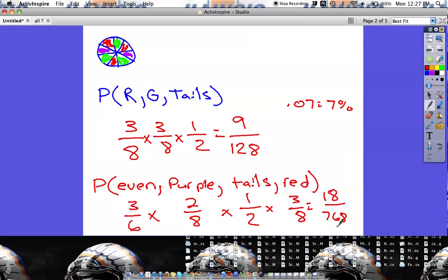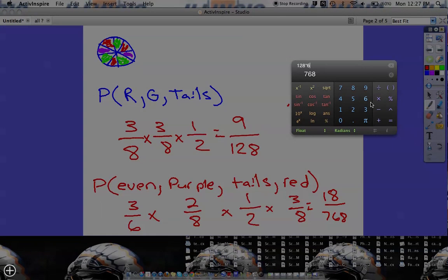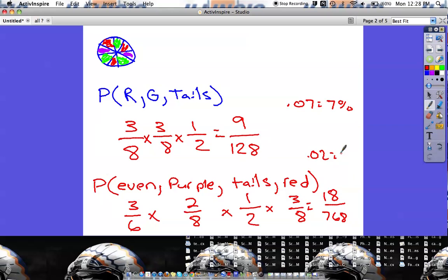So we have an eighteen out of seven hundred sixty-eight chance of having all of these things happen in a row. Now let's figure out what percent that is. If we do eighteen out of seven hundred and sixty-eight, we're going to get .02, which is a two percent chance. So .02 is going to be a two percent chance of all of these things happening.